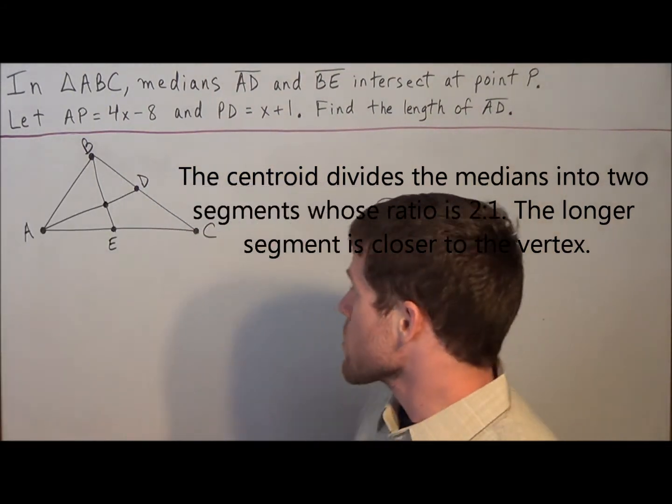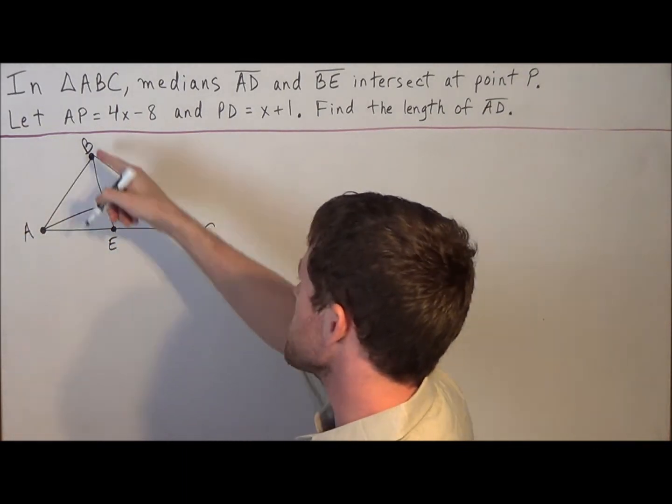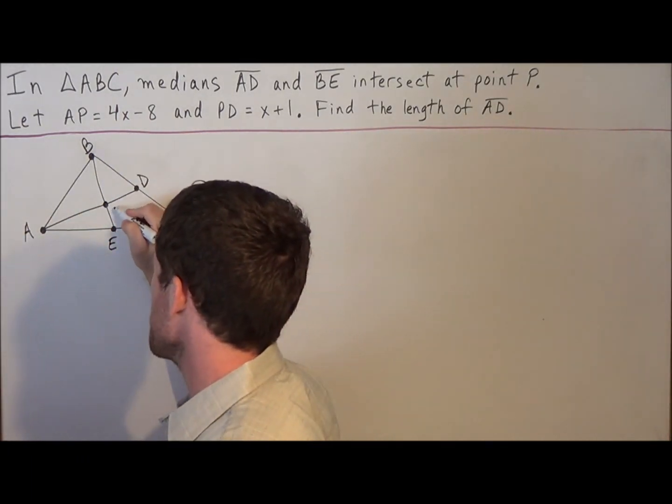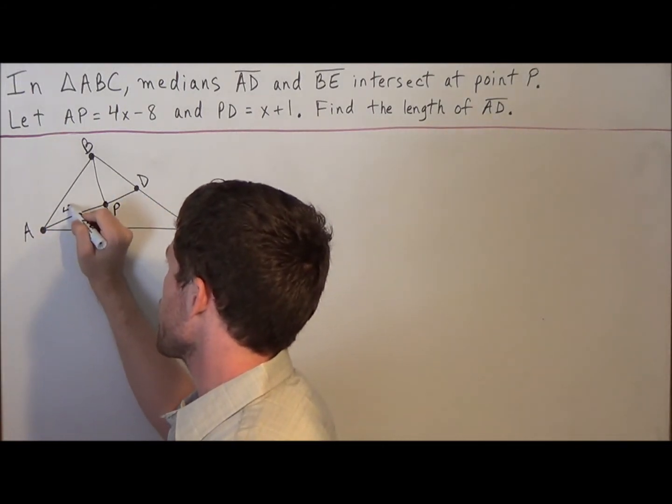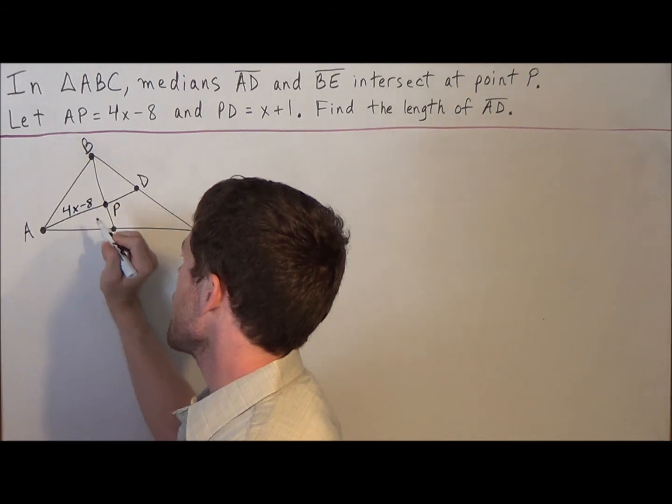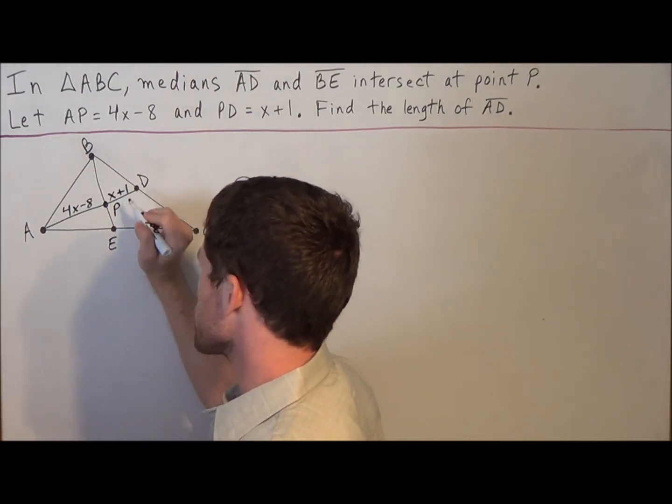Now to make this simple, the first thing we do is label all the information. So we know these medians are intersecting at point P at the centroid, so we could label AP as 4x minus 8, and we could label PD as x plus 1. This information was given to us.